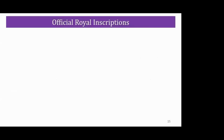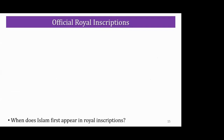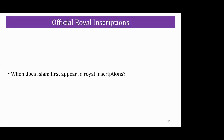Now we've looked at the popular inscriptions and we're going to look at the official royal inscriptions. The key thing to look out for is the chicken-and-egg question — I'm going to suggest that what came first is the official inscriptions, and then what followed is the popular beliefs. So when does Islam first appear in royal inscriptions?